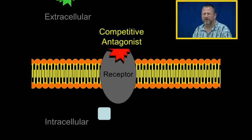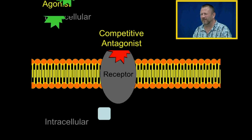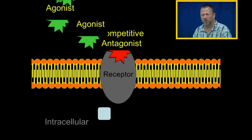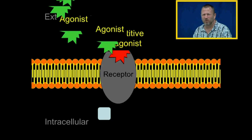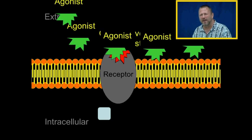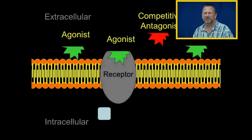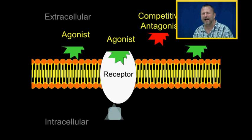My competitive antagonist has bound to the agonist binding site on the receptor. If I add more and more agonist — if I add enough agonist — the agonist will win the competition with the competitive antagonist and activate the receptor.